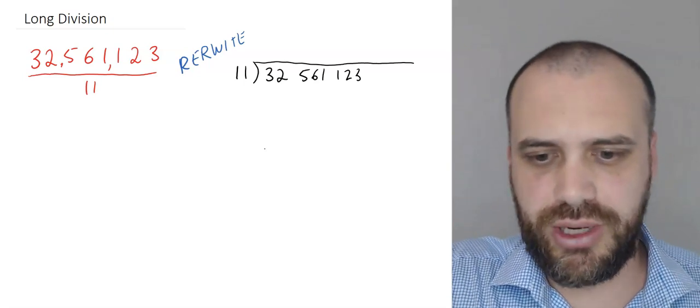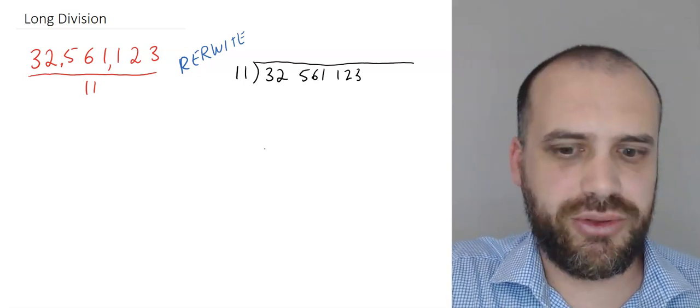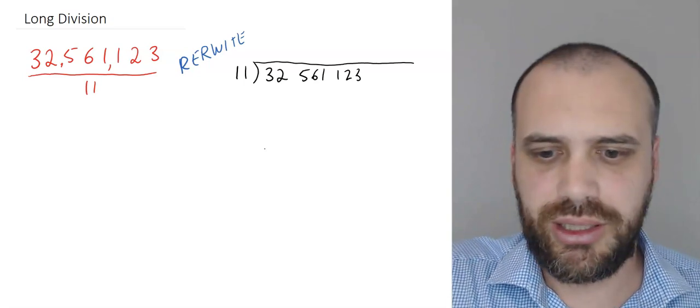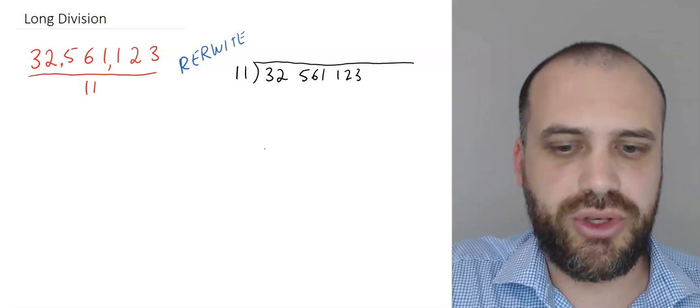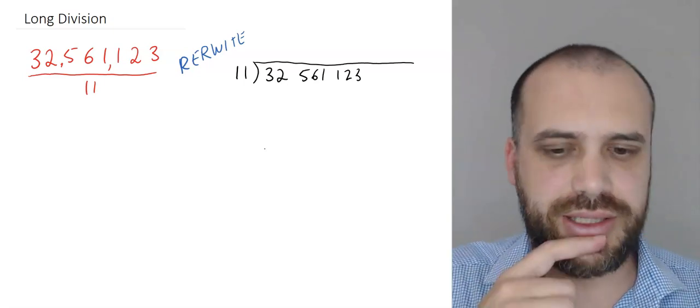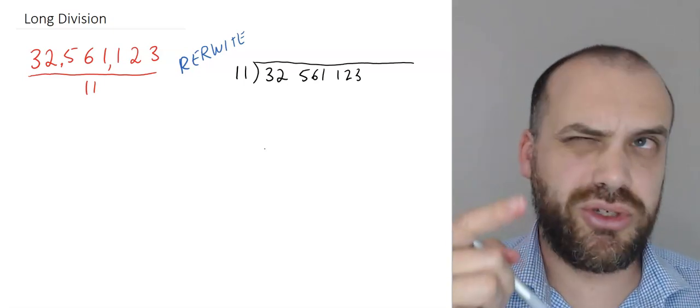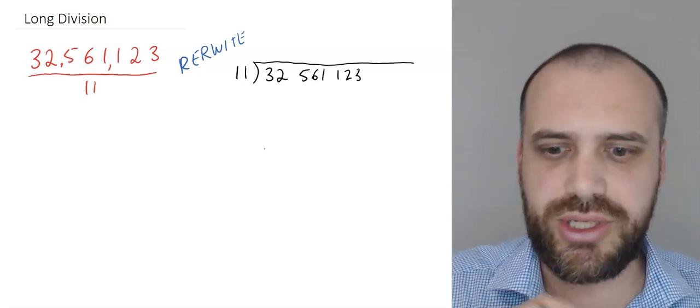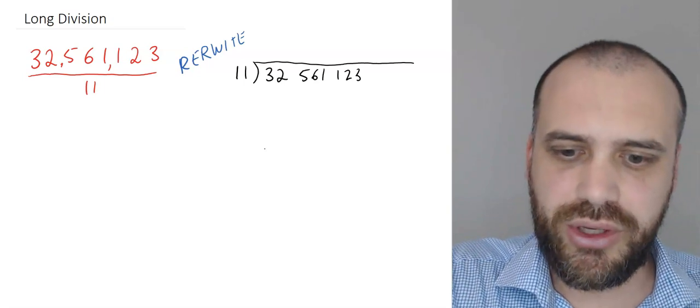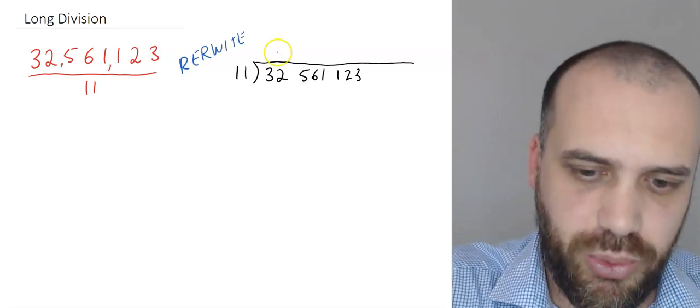Let's look at the number three first. Does 11 go into three? No, it doesn't. Let's move along the chain. Does 11 go into 32? Yes, it does. Now 11 times 2 is 24, so 24 goes into 32. 11 times 3 is 36. 36 is no good. So 11 goes into 32 twice.